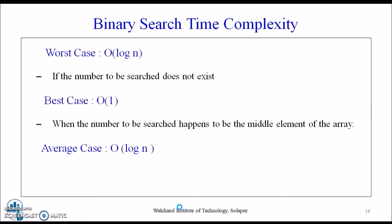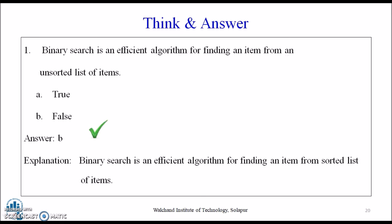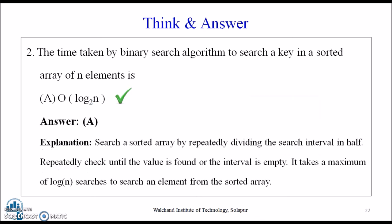Pause the video and answer the following. First: Binary search is an efficient algorithm for finding an item from an unsorted list of items — true or false? The answer is false. Binary search works on a sorted list, not an unsorted one. Second: The time taken by binary search to search a key in a sorted array of n elements is? The answer is O(log n), because binary search repeatedly divides the search interval in half, taking a maximum of log n searches.